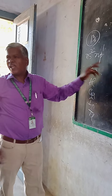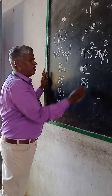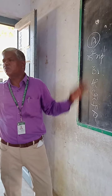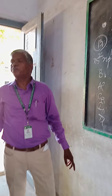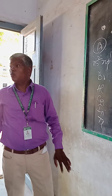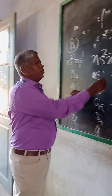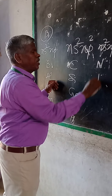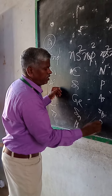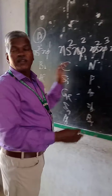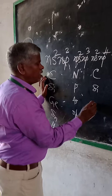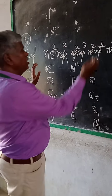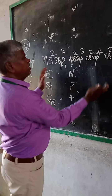Group 14 elements are Carbon, Silicon, Germanium, Tin, and Lead. This group is very important.